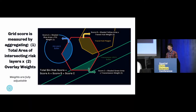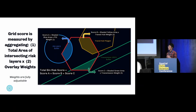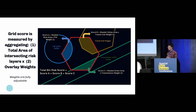We then assign a risk score to each of the cells. Because we buffered all our risk layers, their geometries are now polygons. We can spatially join every layer to our cells in the grid and capture the total area of the intersection. We then assign a score as a linear combination of the area of the intersection and the weights we defined earlier.